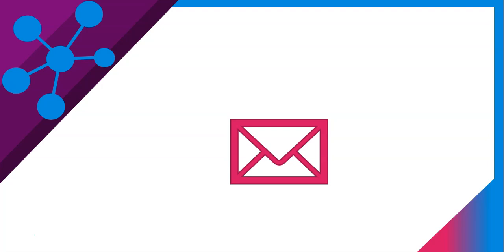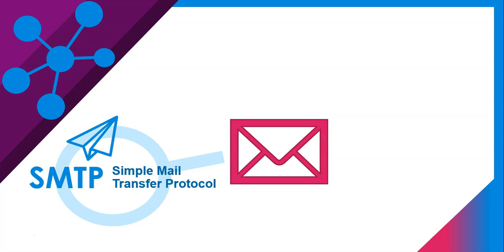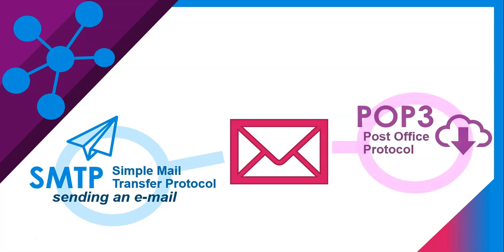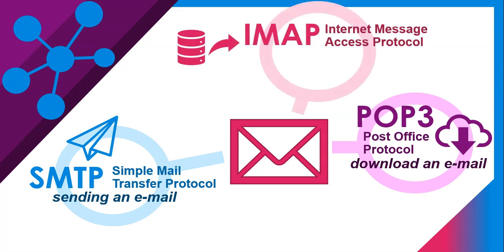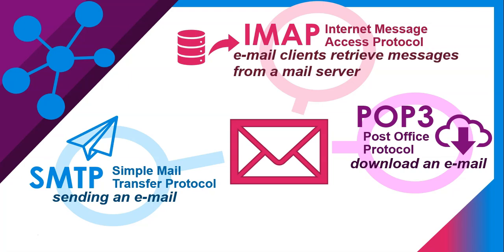There are lots of different types of protocols that communicate in different ways. Let's look at the ones covered for email. You get SMTP, which is Simple Mail Transfer Protocol, designed for the sending of email. Then you get POP3, or Post Office Protocol, for the downloading of an email. And now we have IMAP, Internet Message Access Protocol, which is a protocol where email clients retrieve messages from the mail server. All of these are rules to help devices communicate via email in their special way.